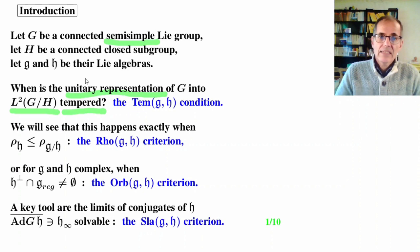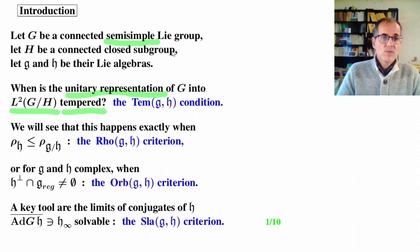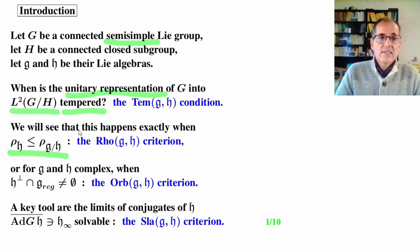To go on, we will have to define precisely what semi-simple means, what a unitary representation is, what the space L²(G/H) is exactly, and what tempered representation means. But right now, I want to explain what is the answer: how can we characterize this purely analytic condition on the homogeneous space G/H? What we will see is that this condition is equivalent to a purely algebraic condition, which is an inequality between two rho functions defined on the Lie algebra H.